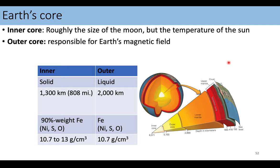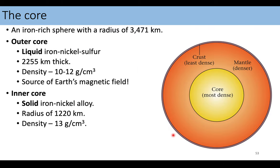The outer core is actually liquid, and it is responsible for our magnetic field. The magnetic field we have around earth is due to the fact that we have a motion of material because the outer core is actually a liquid. The outer core is made of a combination of iron, nickel, and sulfur for the most part, and it is about 2,200 kilometers thick.